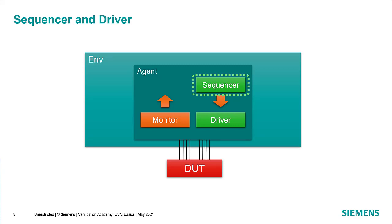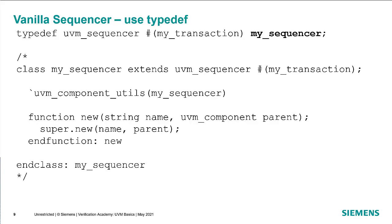Looking at the sequencer, whose job it is to send transactions to the driver: usually we just use a base sequencer, so we don't need to extend the UVM sequencer type. If we were to extend it, we'd parameterize UVM sequencer by the transaction type. But the preferred approach is to create a typedef that extends UVM sequencer parameterized by the transaction type and give it a name — that's preferable unless you have a compelling need to actually add more structure to the sequencer.